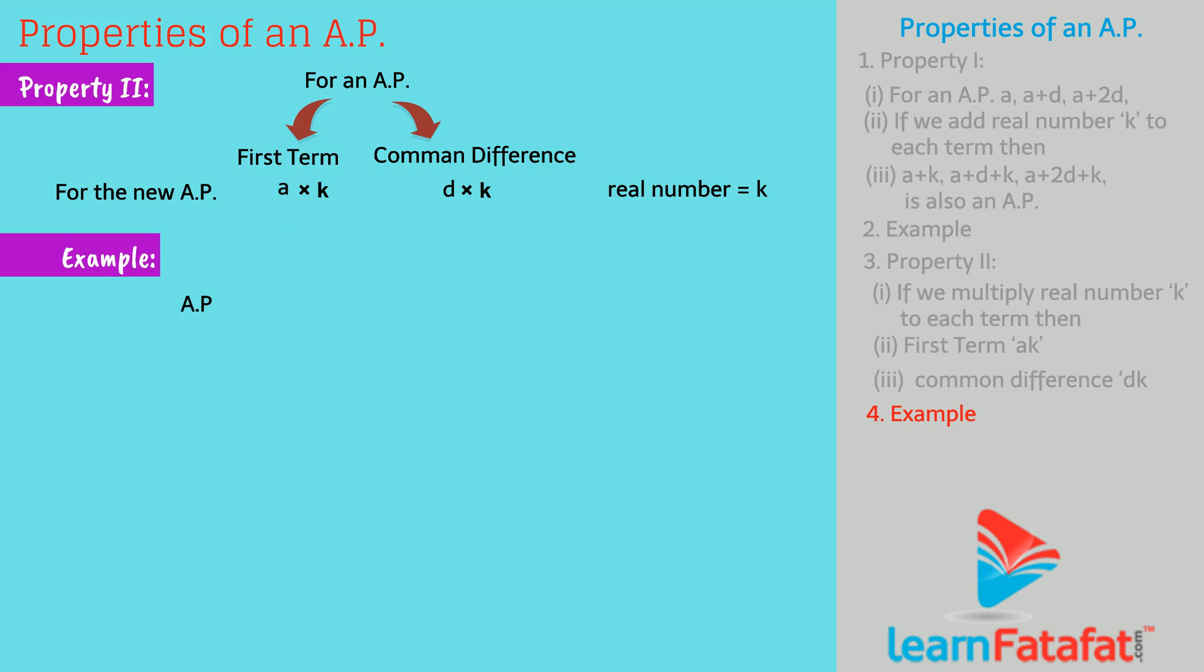Again consider the example of an AP 1, 3, 5, 7. Let us take a real number 2 and multiply it to each term of the AP. Then we get the sequence 1 into 2, 3 into 2, 5 into 2, 7 into 2: 2, 6, 10, 14.